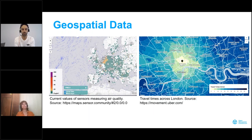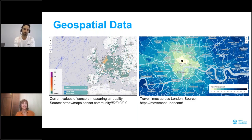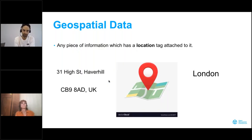Let's talk a little bit about what geospatial data is. Geospatial data is ubiquitous in today's life. You can get it from Internet of Things, you can get it from various platforms like Uber, Airbnb, you have OpenStreetMaps. So it's really something that has become part of our everyday life. But what really is geospatial data? Basically any piece of information which has a location tag attached to it can be considered geospatial data. When I say location tag, it could be anything — a postcode, an address, the name of a country, and so on.